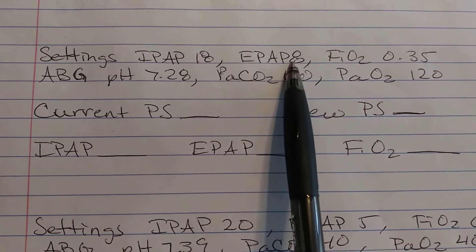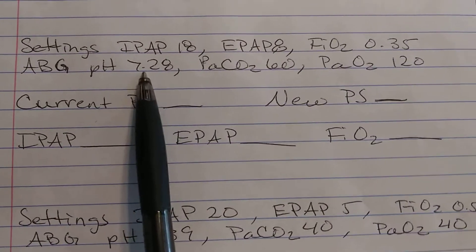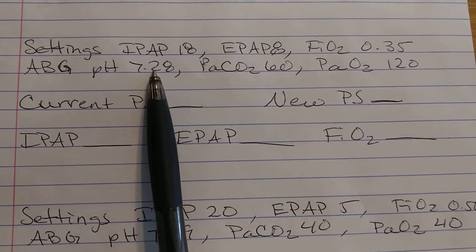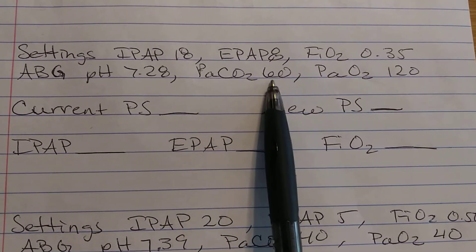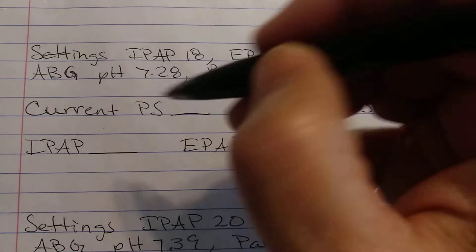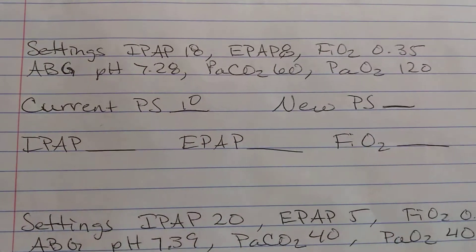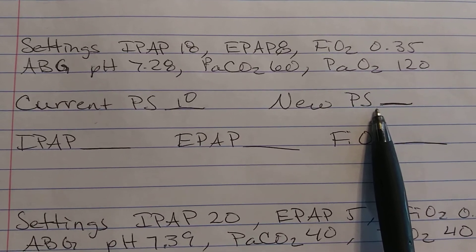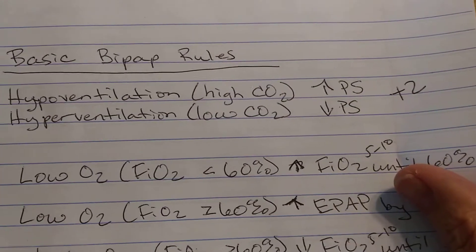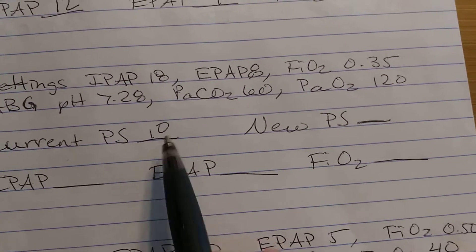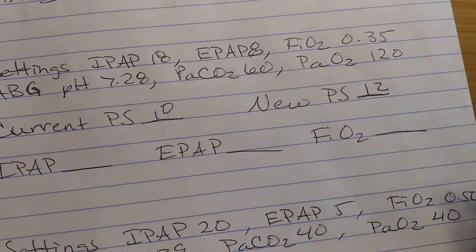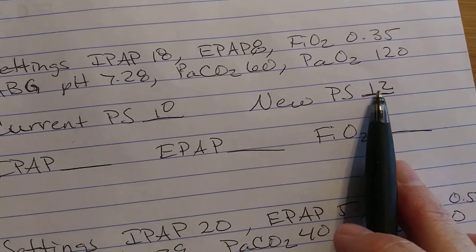Next problem: IPAP of 18, EPAP of 8, FiO2 of 35%. CO2 is 60, O2 is 120. Our current pressure support number is 10 — 18 minus 8. I want to know if I need to change my pressure support, so I look at my CO2. My CO2 is high, so high CO2 means increase pressure support. I need to go to a pressure support of 12 — it was 10, I increase by 2, so new pressure support is 12.